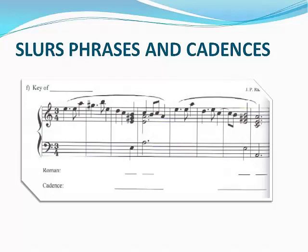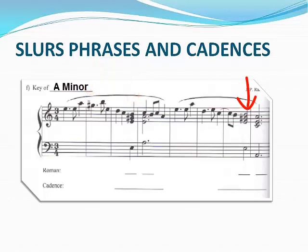Here's another musical passage where we are going to find the key, write the correct Roman numerals under the chords, and identify the cadences. Why don't you pause this module and answer all of the questions? If you still need help, just follow along with me. The first thing we need to do is find the key. Look at the G sharps that are written as accidentals — that's the raised leading note in A minor. We know A minor is C major's relative, so we know we're in the key of A minor.